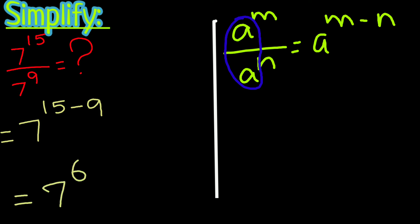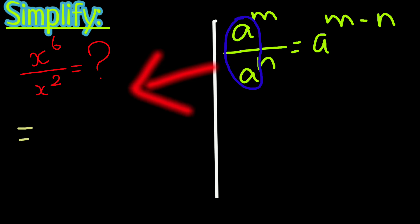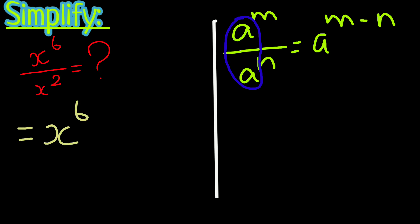Let's simplify a few more problems. x to the power 6 divided by x to the power 2. While dividing the common base, we need to subtract the powers. We have x to the power 6 minus 2, equal to x to the power 4.